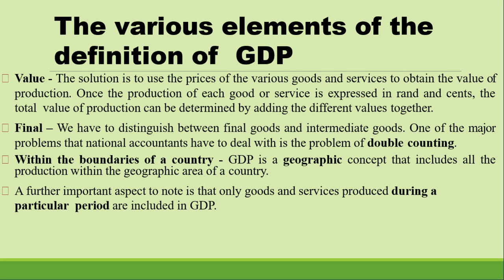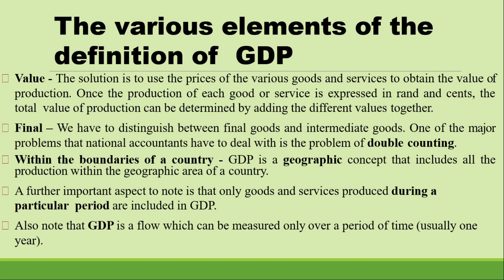If we want to calculate GDP for 2021 and we are looking at the total production of goods and services, and in 2021 we sold 100 cars which were produced in 2020, we do not include those ones because they were produced in 2020. We look at the ones produced in that particular period. We should also know that GDP is a flow which can be measured only over a period of time, usually one year.